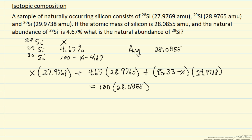I need to multiply this out to solve for x. Rearranging, I have 27.9769 minus 29.9738 times x, plus the other two terms.